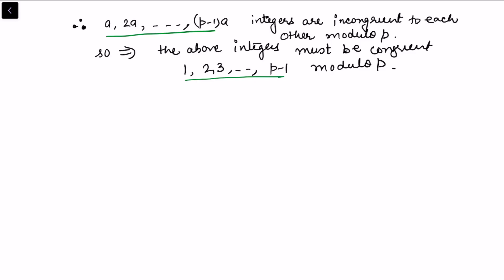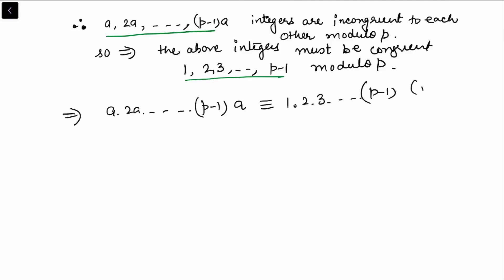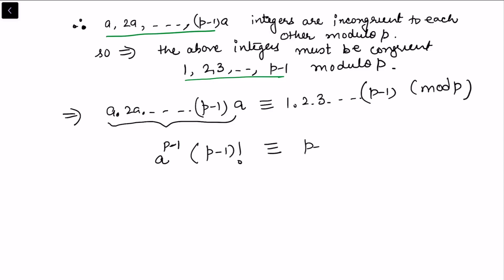Since the set {a, 2a, ..., (p-1)a} consists of p-1 integers that are pairwise incongruent modulo p, they must be congruent to {1, 2, 3, ..., p-1} modulo p in some order. Multiplying all of them together, we get a × 2a × ... × (p-1)a ≡ 1 × 2 × 3 × ... × (p-1) (mod p). The left side gives a^(p-1) × (p-1)! and the right side is also (p-1)!.